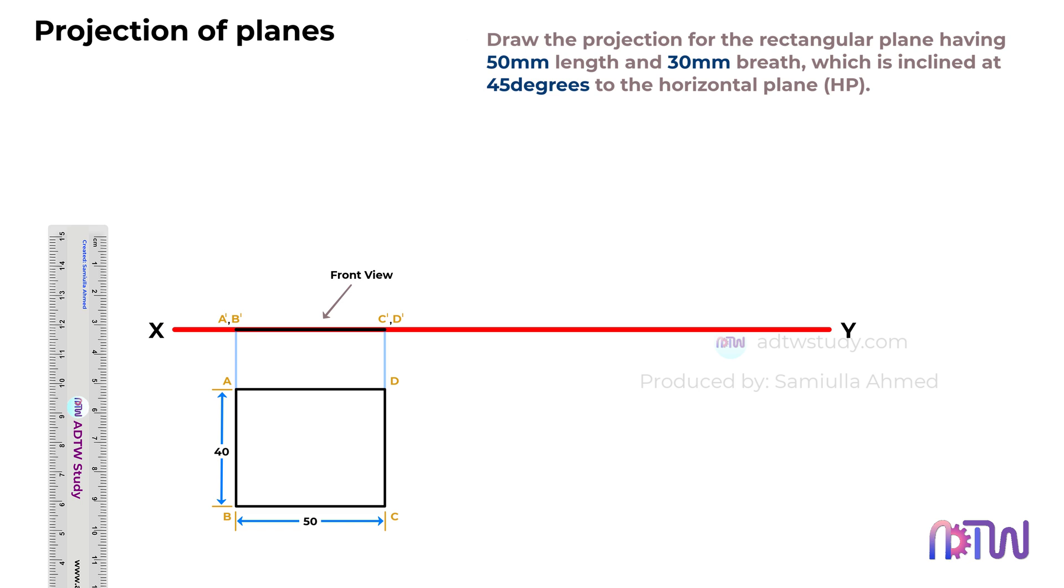You might wonder why the front view is represented as a line on the reference line. This is because the shape is resting on the horizontal plane. When viewed from the front, we only see a straight line, representing the edge of the plane as seen from this perspective. The purpose of drawing these true shapes and lengths is to assist us in creating the actual rectangle, which is inclined at 45 degrees as specified in the question.